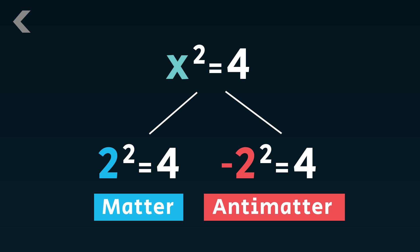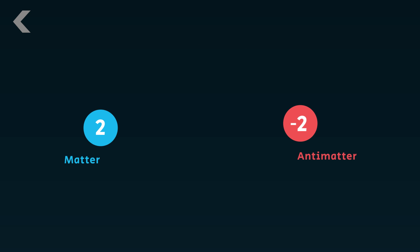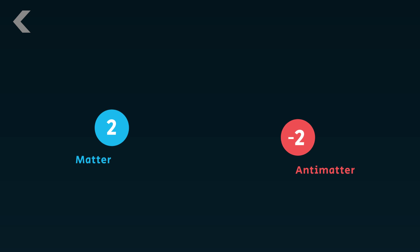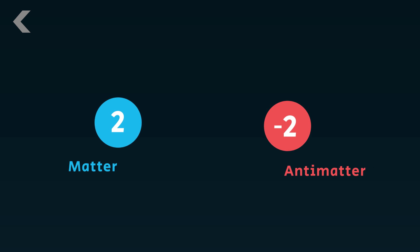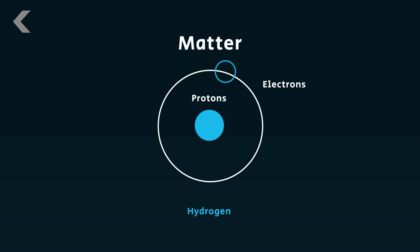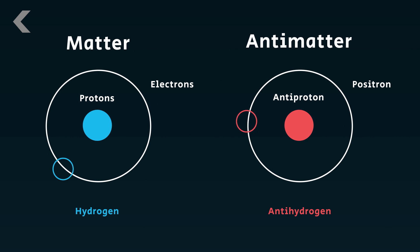The reason you don't see antimatter around is because if it were to pop into existence and hit regular matter, the twos would cancel each other out and disappear in a spectacular burst of energy called an annihilation. All matter is made of protons and electrons. Antimatter, the opposite, is called an antiproton and a positron.